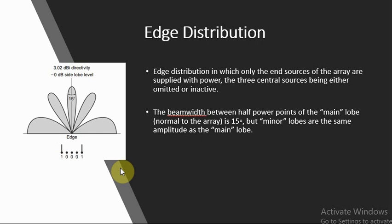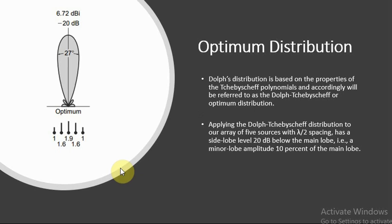If the distribution is between binomial and edge type, then a compromise between bandwidth and side lobe levels can be made. So the next design is optimum distribution. An amplitude distribution of this nature from linear in-phase broadside arrays was proposed by Dolph, which has further properties of optimizing the relation between beam width and side lobes.